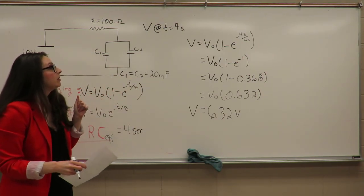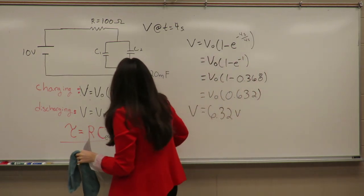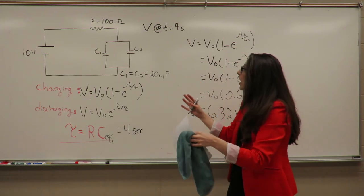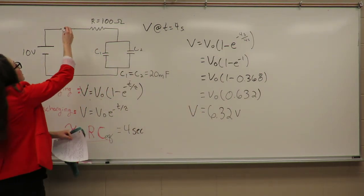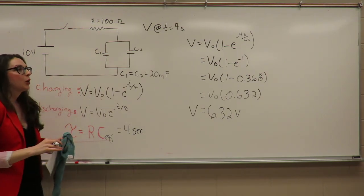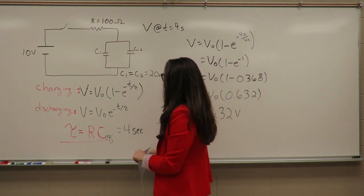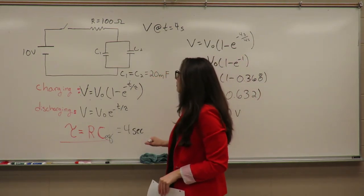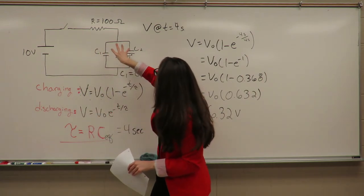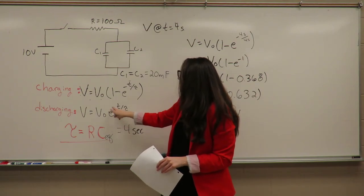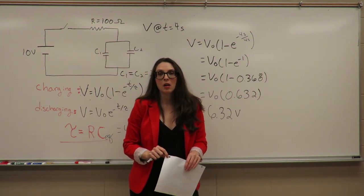Let's say that instead of charging our capacitor, we want to discharge it. After more than 4 seconds, we've let our capacitors charge up to their full potential of 10 volts. We then disconnect our capacitors from the power source and connect them to another device so they discharge. To evaluate the potential on our capacitors as they discharge, we use the equation: V equals V₀ times e raised to the minus t over tau, where the critical time constant is still the resistance times the capacitance of our circuit.